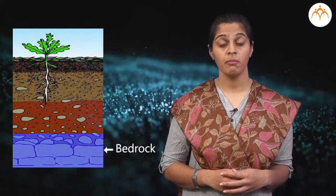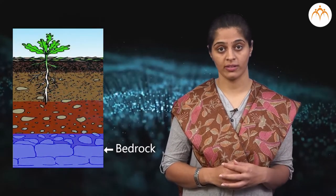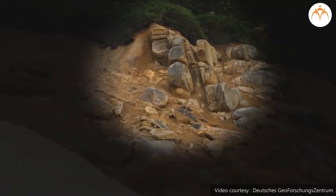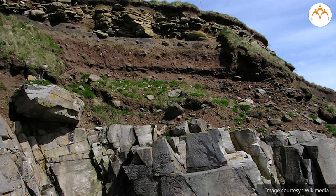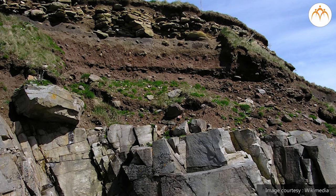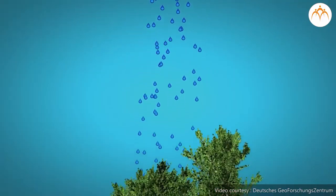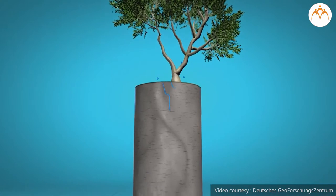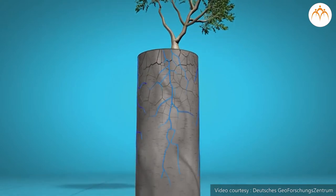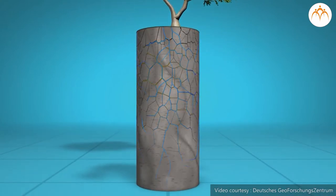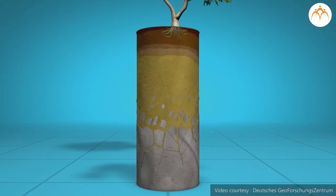Bedrock is the lowest and hardest layer of land, made up of massive blocks of big rocks. Weathering of bedrock — that is, the gradual slow breakdown of rocks into pieces and particles — by various physical and chemical forces such as hot and cold temperatures, rain and underground water movements, and pressure generated due to movements in the earth's inner mantle and core over thousands of years leads to the formation of soil from bedrock.